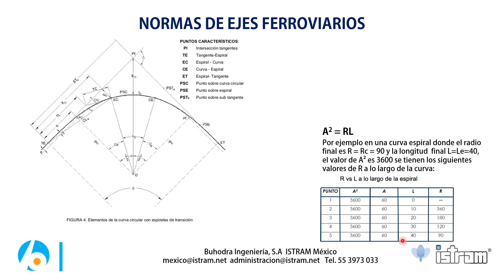El parámetro A mantiene esta conexión hasta que se vuelve constante en la curva circular, y de igual manera sucede al final. Comienza la clotoide de salida con un radio de 90 y una longitud de 40, midiéndose en sentido contrario — la distancia va disminuyendo 30, 20, 10, 0, hasta que llegamos a la conexión con la tangente, donde el radio se vuelve infinito.